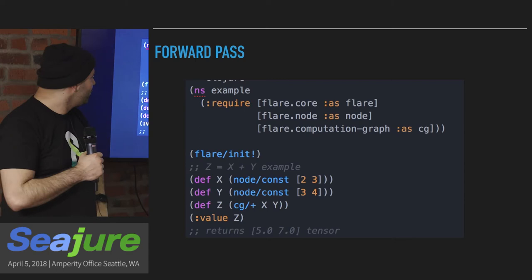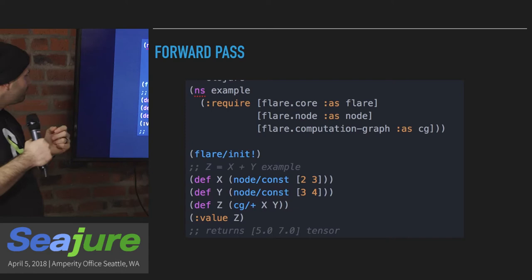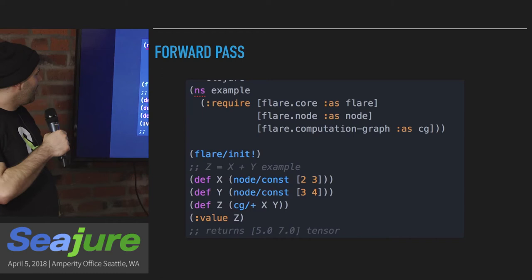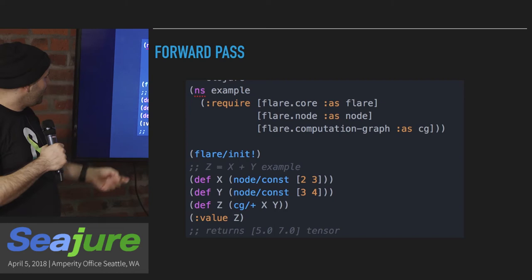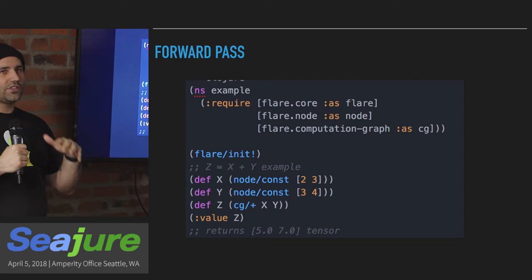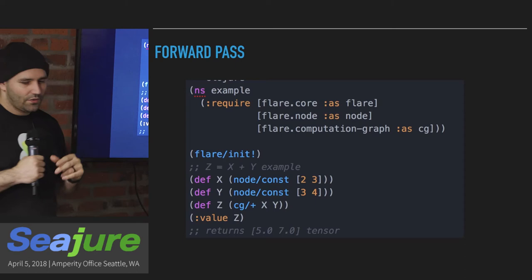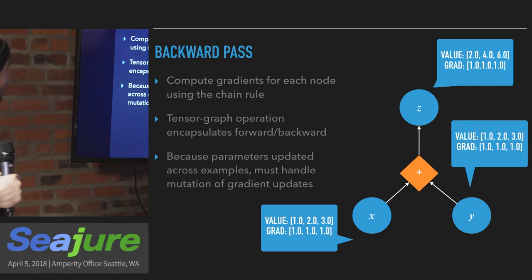Here's some actual Flare code. The way Flare works is you call flare-init, mostly because there are a lot of native libraries to load for Intel MKL. Then you define a node with a little vector, define the plus operation — you can choose to import those math operations — and then you can ask for the value of that node and get the tensor. If you're used to TensorFlow, you have to execute the session and do all that stuff. But in Flare, by default all the computation is eager — it happens as soon as you create the graph node.